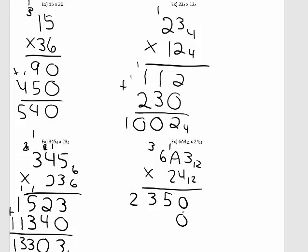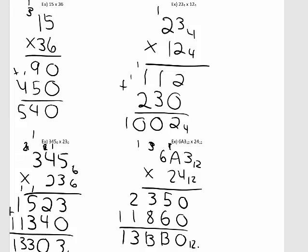Put the 0 as a placeholder. 3 times 2 is 6. A is 10, so 10 times 2 is 20 — I can take one group of 12 from 20 with a remainder of 8. The 8 comes down, carry the 1. 6 times 2 is 12, plus 1 is 13 — one group of 12 with a remainder of 1. Time to add: 0 plus 0 is 0. 5 plus 6 is 11 — and since A is 10, B is 11, so I'll write B. 3 plus 8 is 11 — so again, I'll write another B. 2 plus 1 is 3. Bring down the 1. Don't forget the base 12. So my answer is 13BB0 base 12.